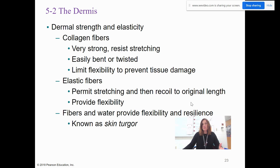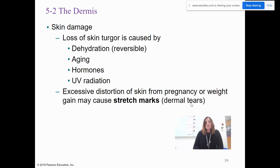Having these fibers and water provides flexibility and resilience, which is known as skin turgor — this helps the skin maintain its shape. Skin can lose turgor through dehydration, which is reversible, as well as aging, hormones, and UV radiation. It's extremely important that you protect your skin from the sun.